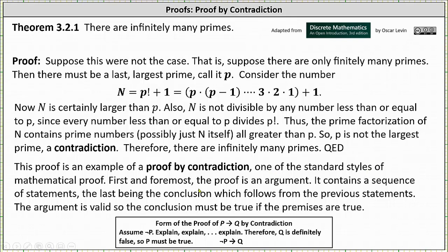First and foremost, the proof is an argument. It contains a sequence of statements, the last being the conclusion, which follows from the previous statements. The argument is valid, so the conclusion must be true if the premises are true. And now let's go back and take a look at this proof in detail, step by step.